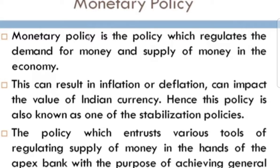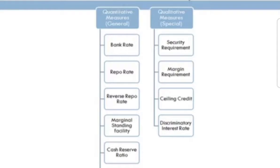Now we are going to see the various tools. The instruments of monetary policies include quantitative measures — that is general measures — and qualitative measures — that is special measures. In quantitative measures: bank rate, repo rate, reverse repo rate, marginal standing facility, cash reserve ratio, statutory liquidity ratio, and open market operations. In qualitative measures: security requirement, margin requirement, ceiling on credit, and discriminatory interest rate. Repo rate and reverse repo rate are very important from an exam viewpoint.